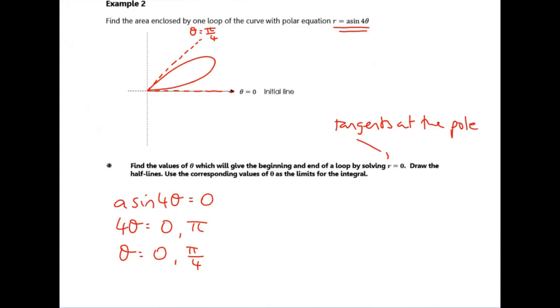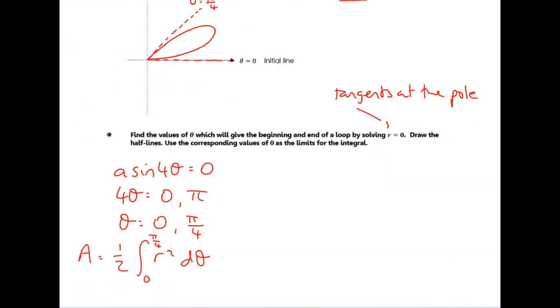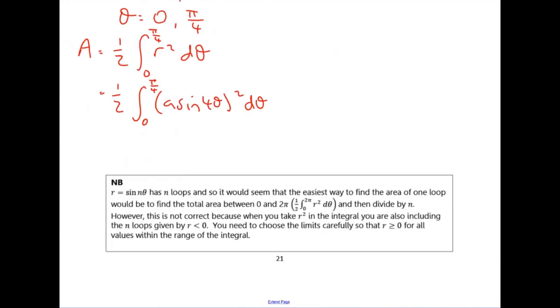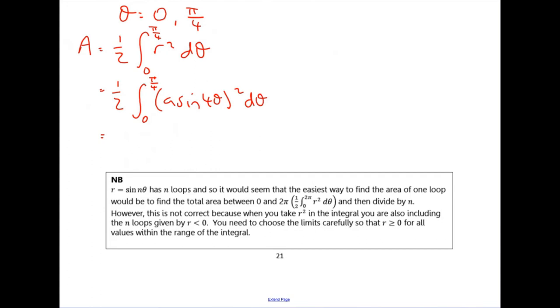Integrating as this angle sweeps through here, adding up all these little sectors, gives us the area. So the integral we're going to do is a half times the integral of r squared d theta, going between limits zero and pi over four. Those tangents, those half lines, are our limits. r we had as A sine four theta, so substituting in, this is a half times the integral of (A sine four theta) squared d theta. Expanding this out gives a squared sine squared four theta, and I take the a squared out to the front as it's just a constant.